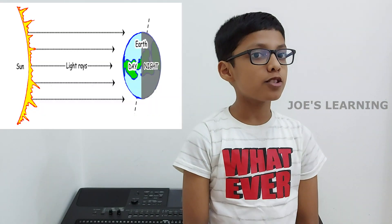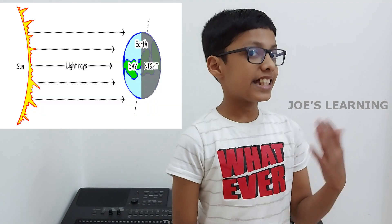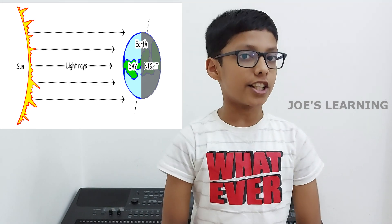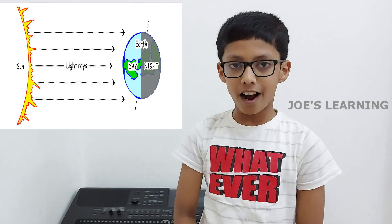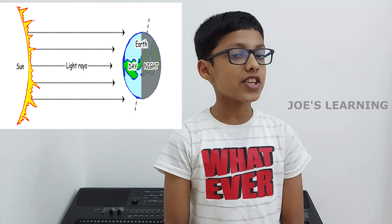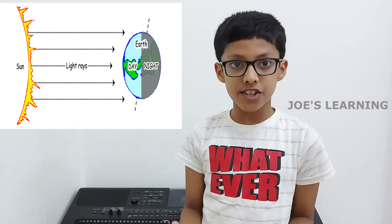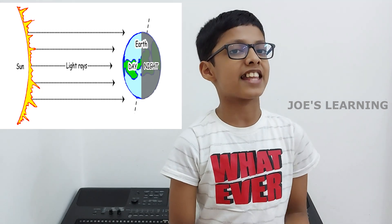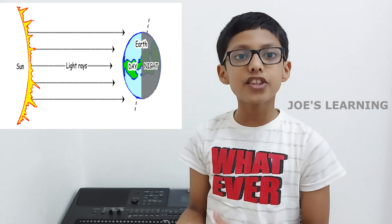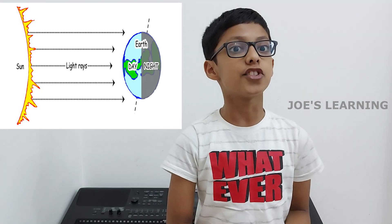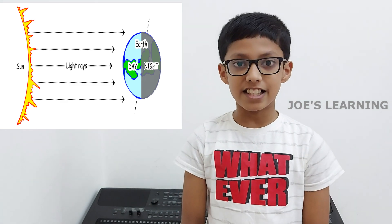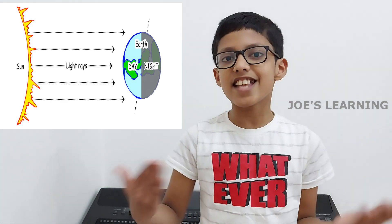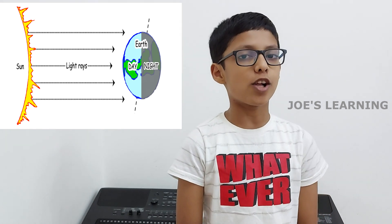The rotation of planets causes days and nights on it. This is because only one half of a planet faces the Sun and therefore this half receives sunlight and has day. While the other half is in starlit darkness.